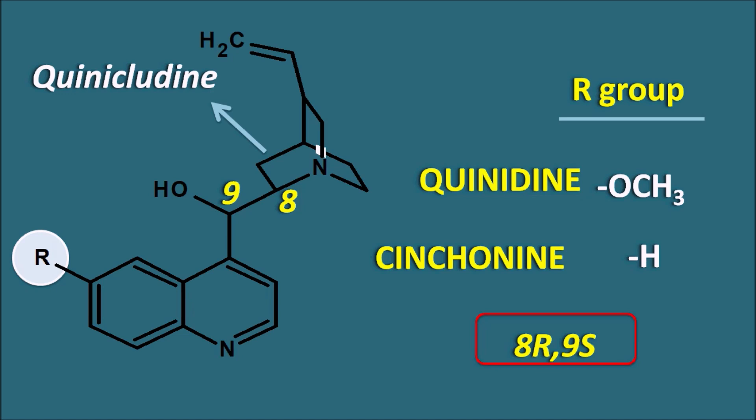To clarify naming: quinidine has the suffix '-idine', whereas cinchonidine has the suffix '-ine'. Quinidine and cinchonine share the 8R9S configuration, while quinine and cinchonidine share the 8S9R configuration. Cinchona has four important quinoline alkaloids. Among these, quinine is very important and used as an antimalarial agent, and quinidine is used as an antiarrhythmic agent.